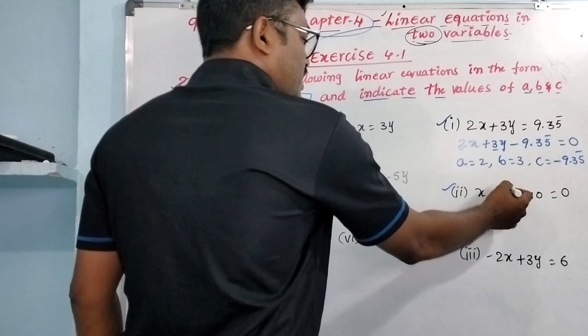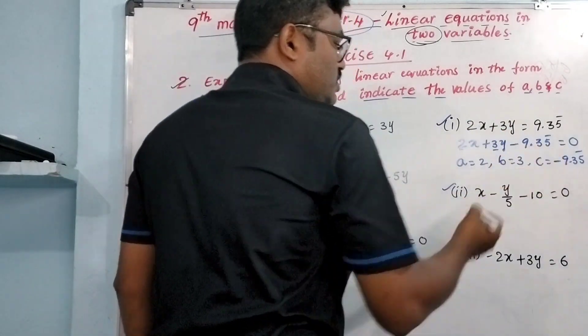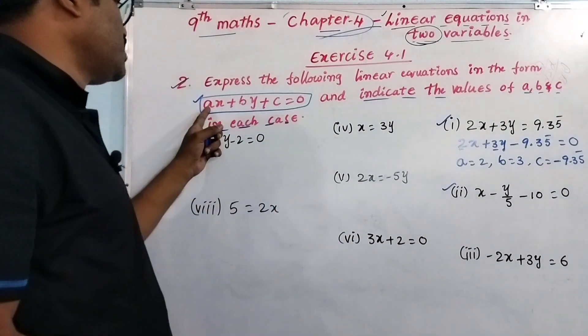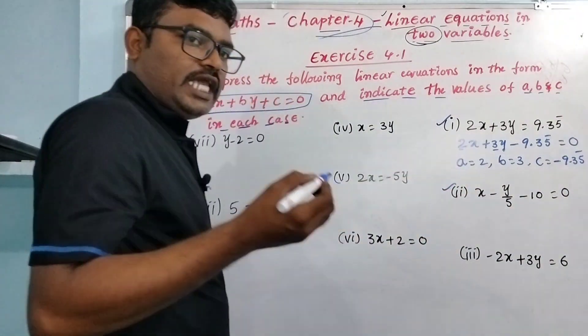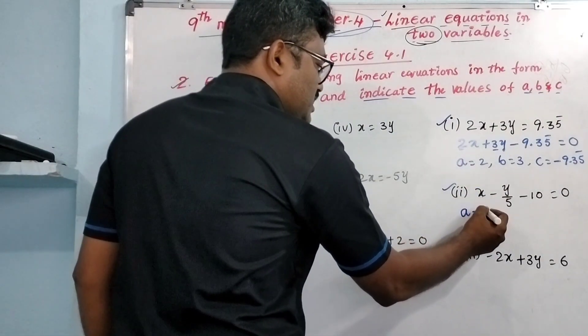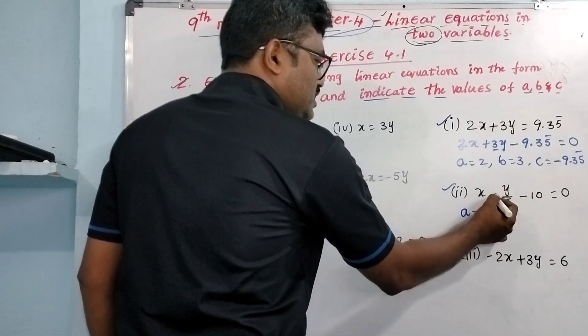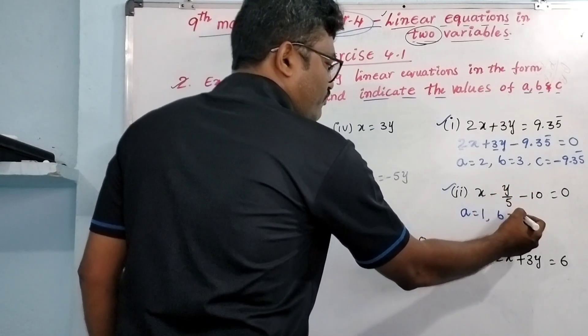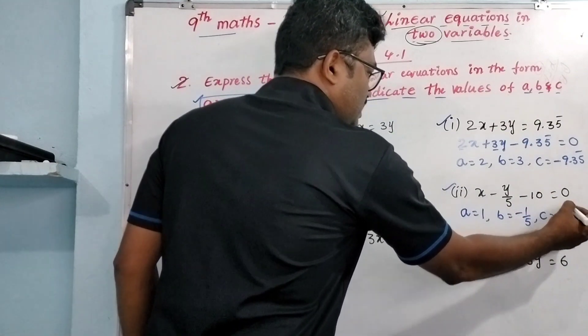Second question: x minus y/5 minus 10 equals 0. It is already in the form ax + by + c = 0. Just point out the A, B, C values. X coefficient is A, that is A = 1, B equals minus 1/5, and C is minus 10.